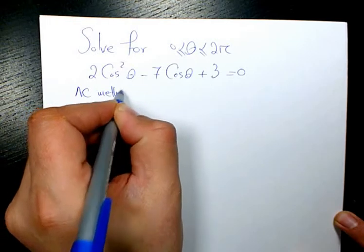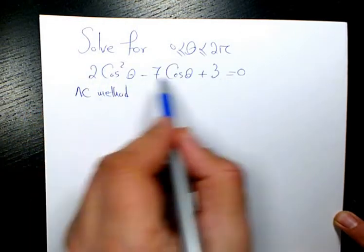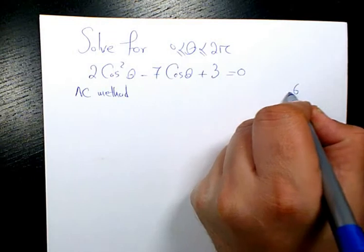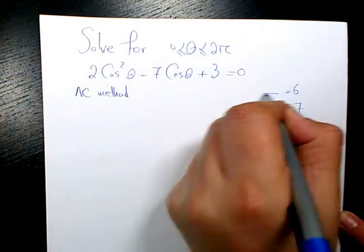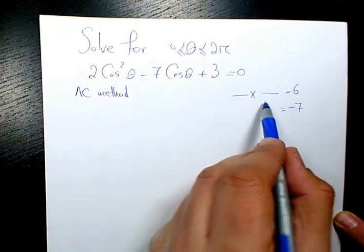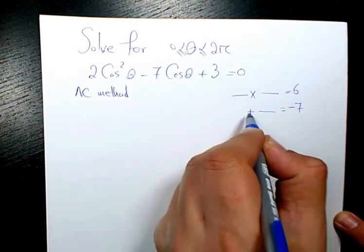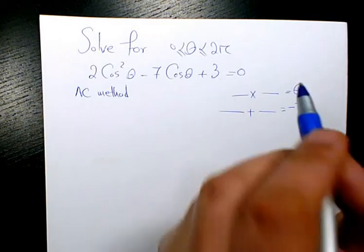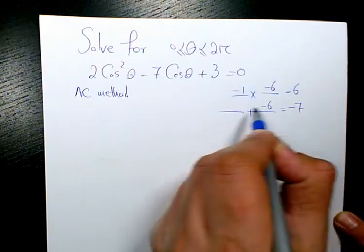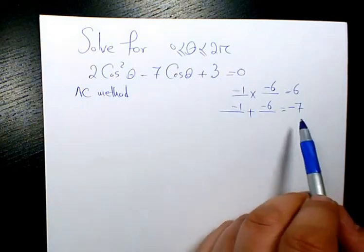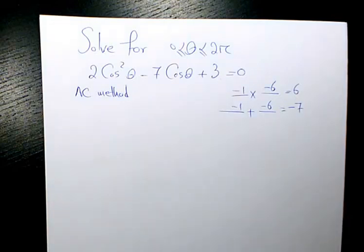AC method is saying that multiply these two numbers. I have 2 times 3, which is going to be 6, and the coefficient here is negative 7. So we're looking for two numbers that multiply to positive 6 and add to negative 7. These two numbers can be negative 1 and negative 6. When you add them, it's going to be negative 7, and when you multiply them, it's going to be positive 6.